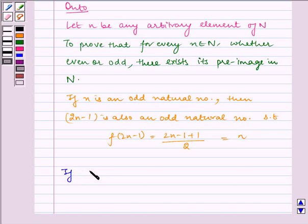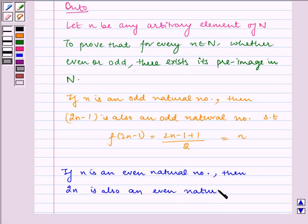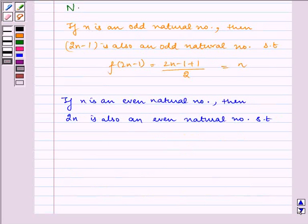If n is an even natural number, then 2n is also an even natural number such that f(2n) equals 2n/2, which equals n.